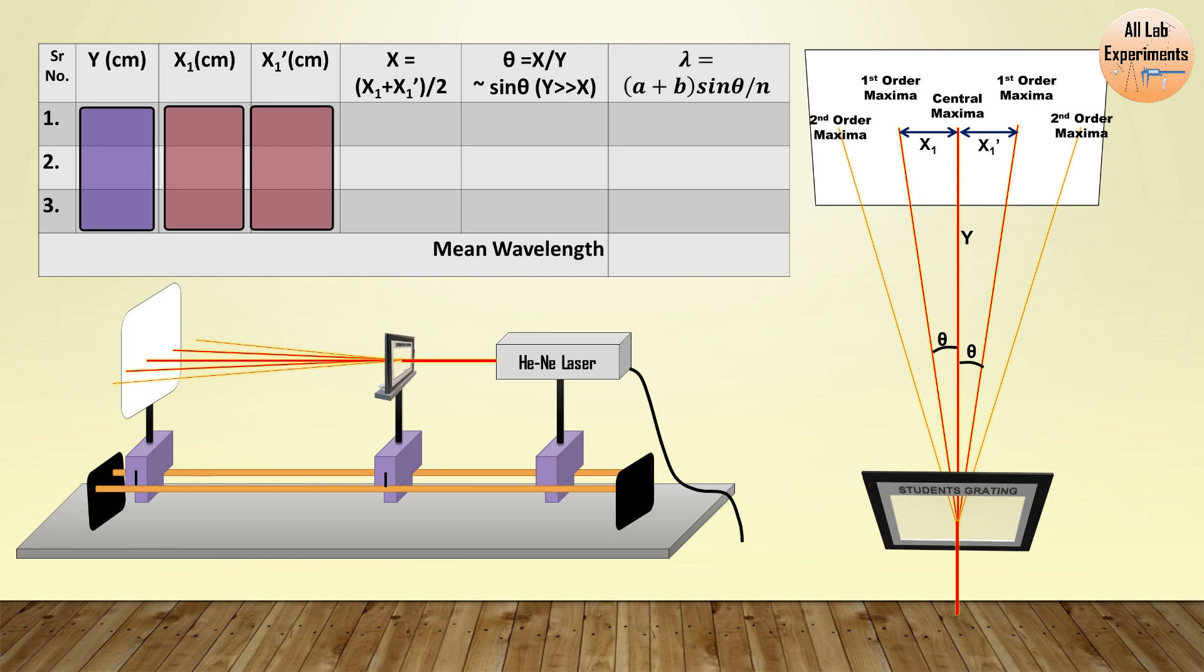And then you can calculate the distance between central maxima and first maxima towards right and left hand side. In the next column we can take a mean of them and finally we need the value of sinθ. The ratio of this value X and Y should give us tanθ, but when the angle is very small and we can say that when Y is much greater than X, in that case the value of tanθ, θ, and sinθ are very close.